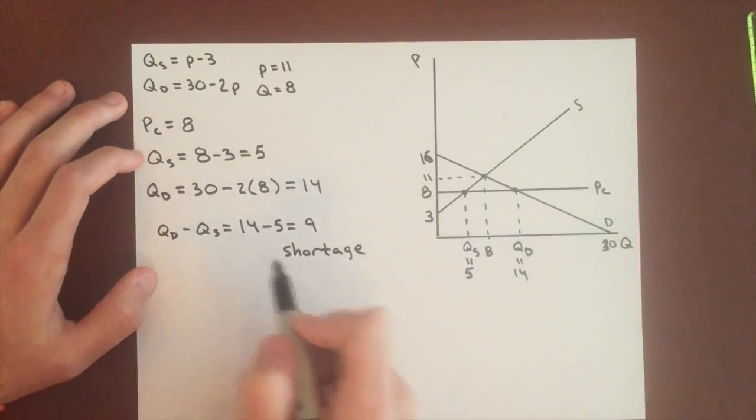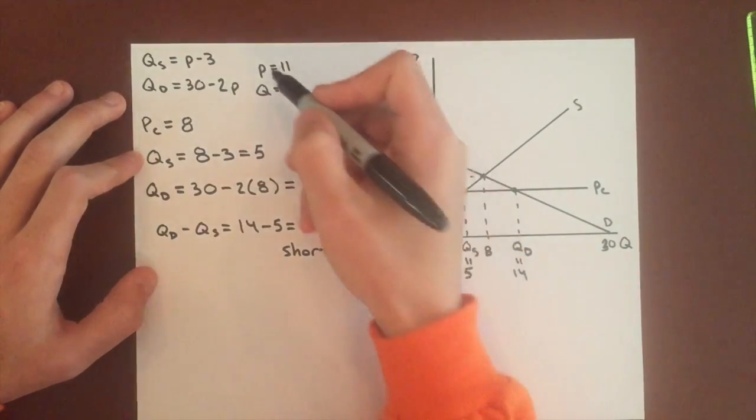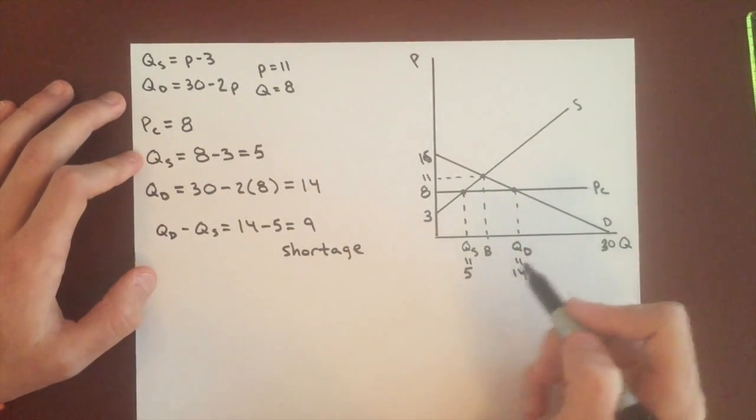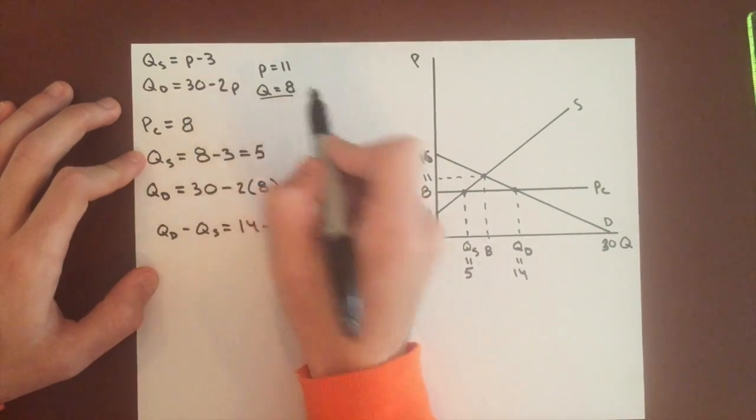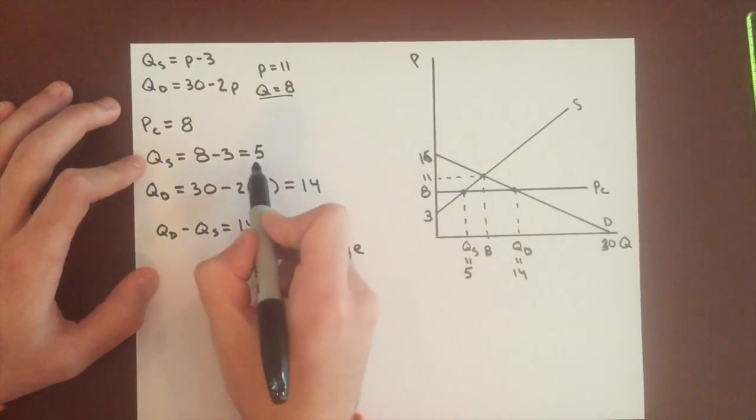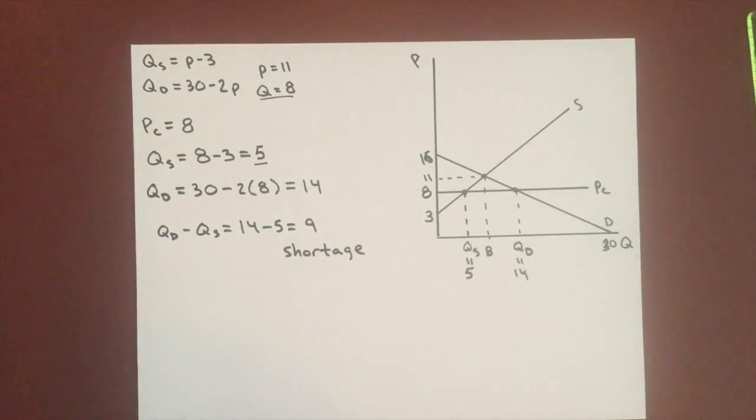And our price has decreased from 11 to 8, but our quantity has decreased as well from 8 in original equilibrium to only 5 when we institute the price ceiling.